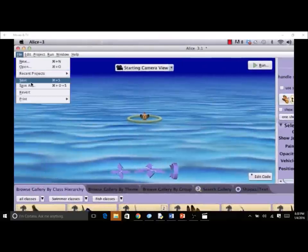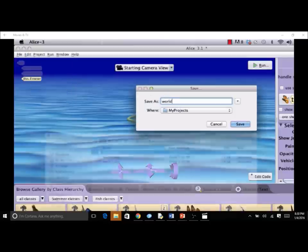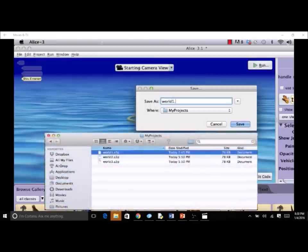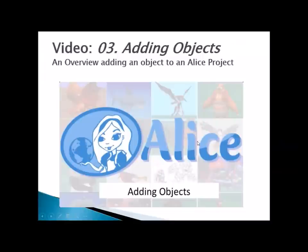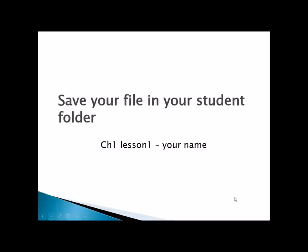It is always a good idea to save the project every 15 to 20 minutes. Go ahead and save your Alice project, but save it as the chapter and lesson number. Right now save it as CH1, Lesson 1, dash, your name. Save your file in your student folder using that convention.